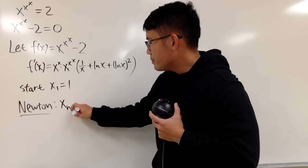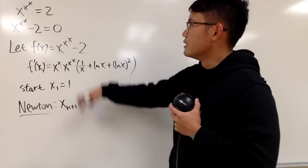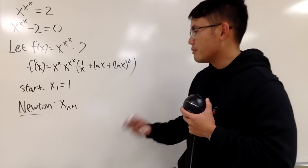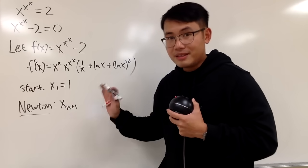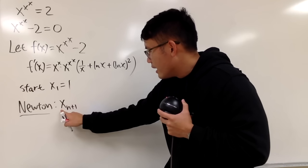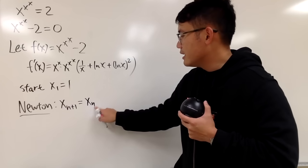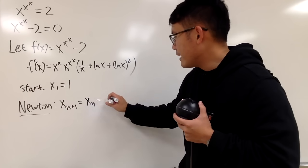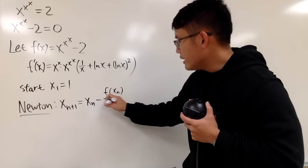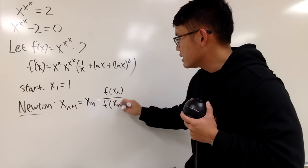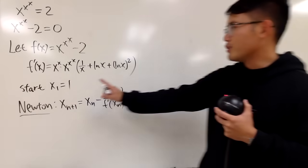So xn plus 1, meaning the next x value, should give us a really good zero. The approximation will be better and better. Hopefully that's the case. Sometimes it may not work, but in this case it works. Anyway, xn plus 1 equals xn, meaning the previous x value, and then we minus the value of the function at the previous x value divided by the derivative at xn. So that's pretty much the idea. And we are going to start at 1.